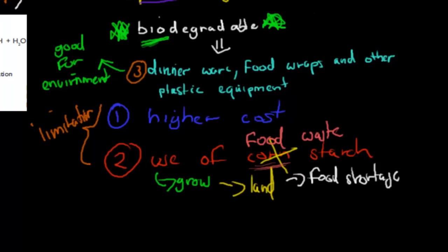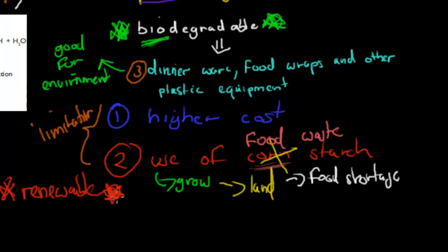Another key advantage is that PLA is renewable. Unlike petroleum-based plastics — where petroleum will eventually run out — PLA can be grown on a continuous basis. This means we can keep producing it even when petroleum runs out, just from a different source.